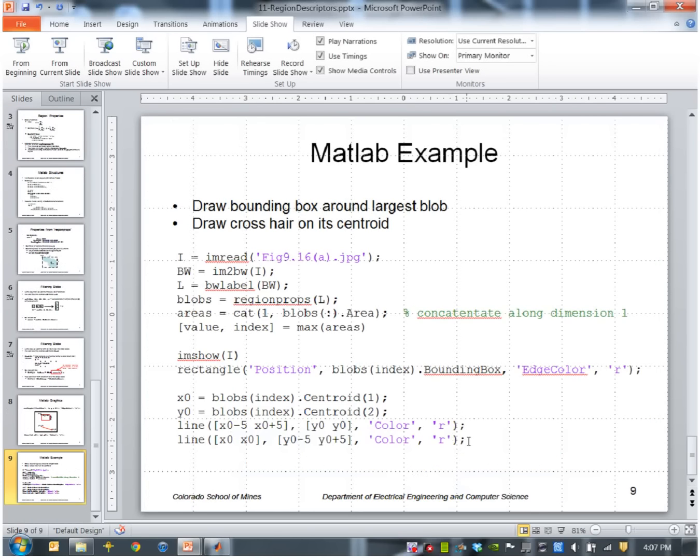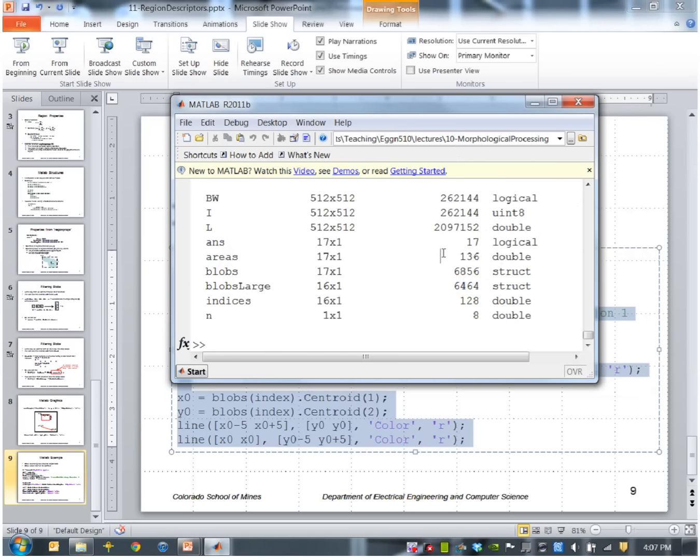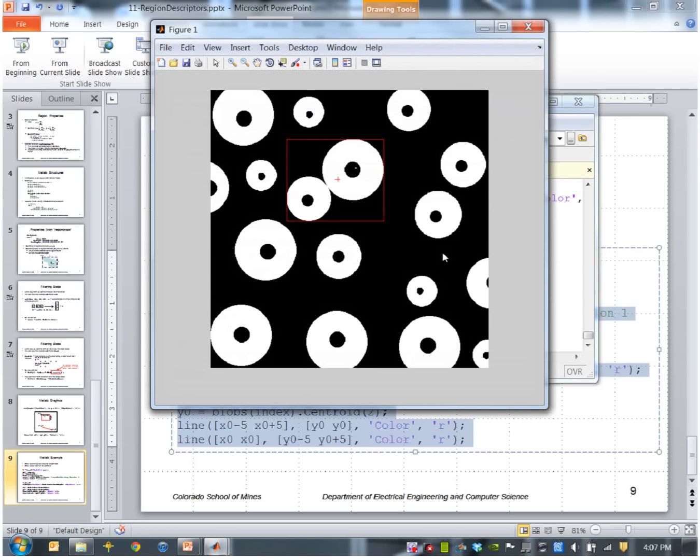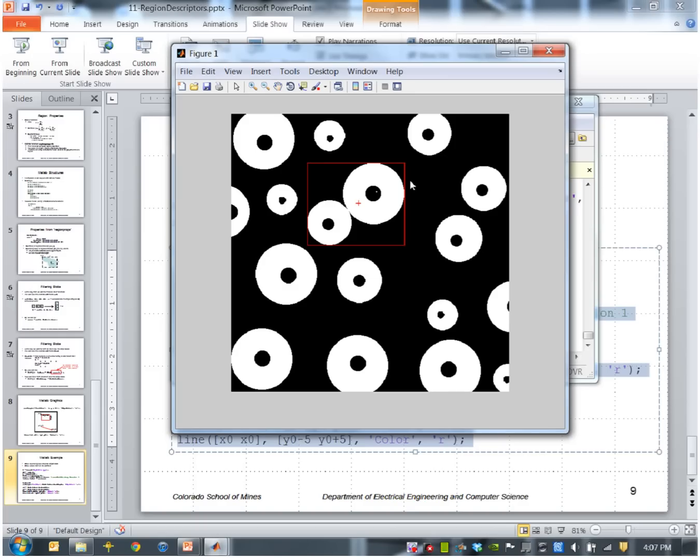So let me just go ahead and copy this and paste it into there. So it ran that code. And as you can see, I have the bounding box around this blob. So this is actually a single blob because these two white regions touch. And it drew the centroid right here where the crosshair is.